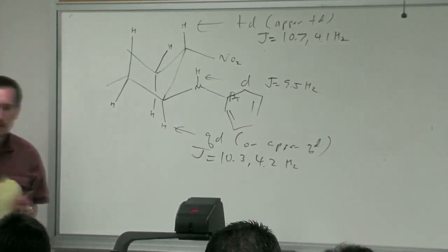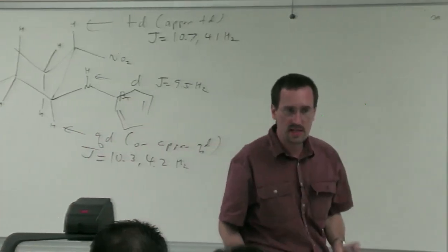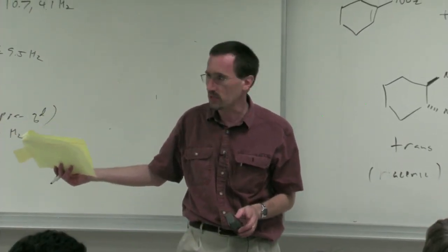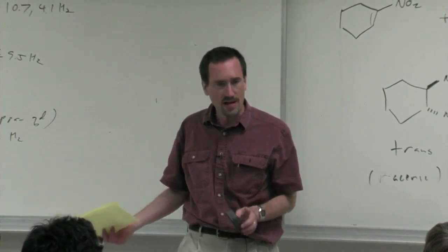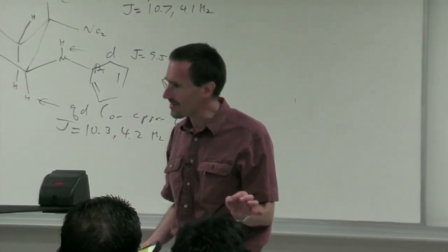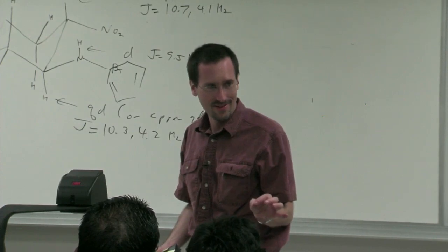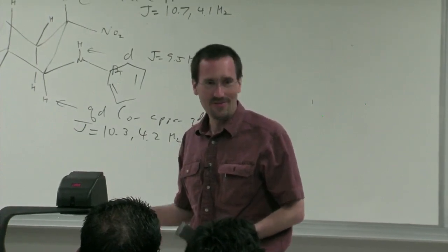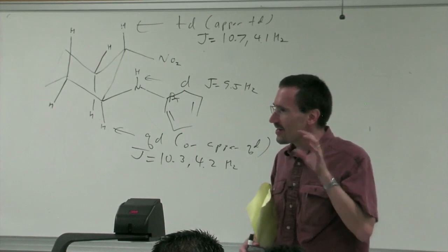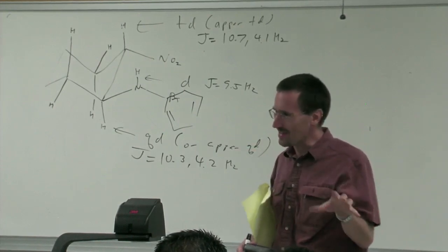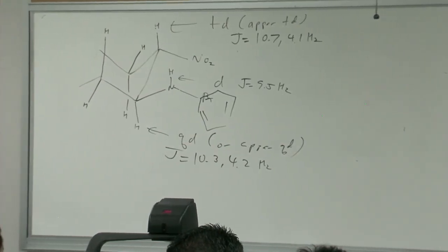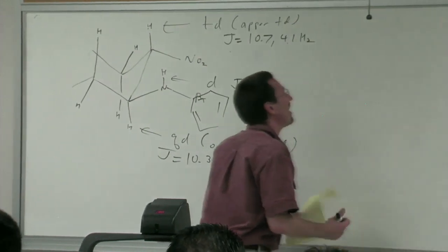This is critically important. Imagine starting a total synthesis of a natural product, doing a key step that sets stereochemistry early, and making a wrong conclusion. Twenty steps later you get your natural product, but it doesn't match the published spectrum. You're ready to graduate and find out your synthesis will be titled 'total synthesis of epi-hard complex molecule' rather than 'total synthesis of hard complex molecule.' Getting stereochemistry right from NMR is really, really important.